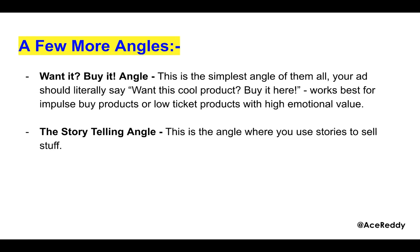The 'want it, buy it' angle is the simplest of them all — your ad literally says 'want this cool product? Buy it here.' This works best for impulse buy products or low-ticket products with high emotional value. The storytelling angle is where you use stories to sell. Don't fake a story — take stories that are relevant, put them together, and sell your product using them. That's it for this module, see you in the next one.